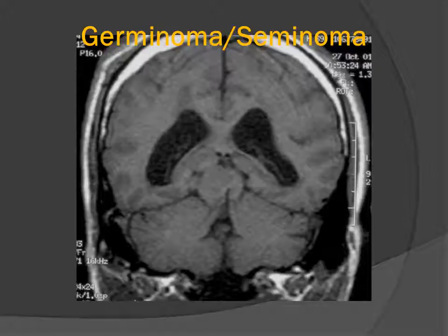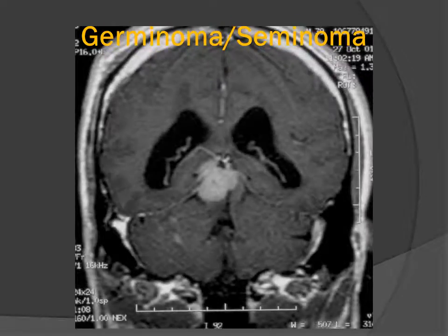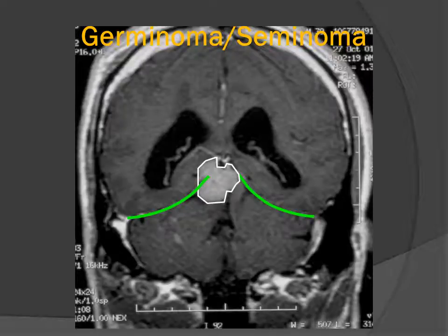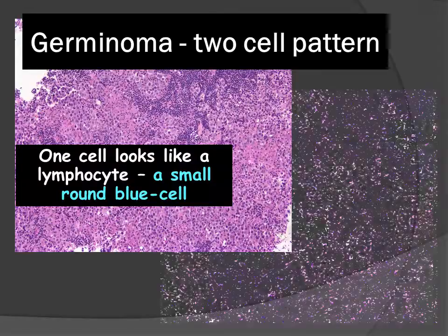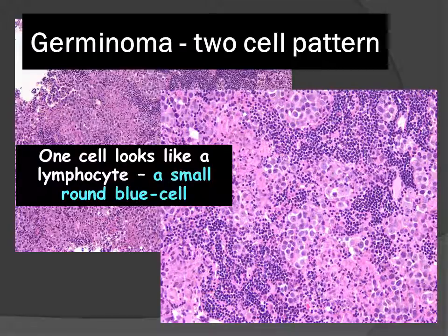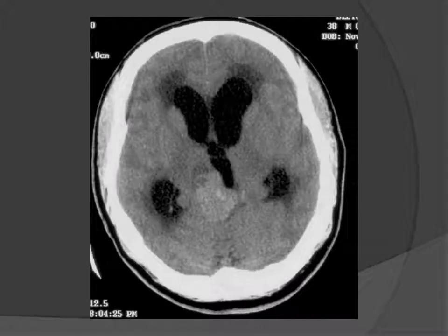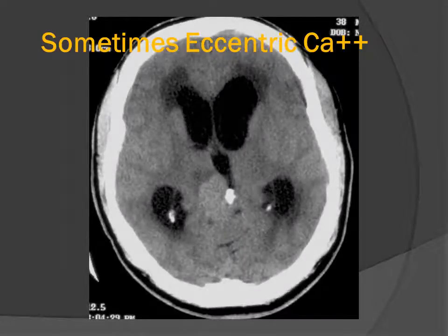Pineal region masses tend to grow through the tentorial hiatus into the posterior fossa. On this coronal T1-weighted exam without contrast and then after giving contrast material, we can clearly see that two-thirds of this tumor is extending through the tentorial opening into the posterior fossa. We can also see outlined in green the tentorial leaflets. When we look at the histology of pineal region tumors, we can see they commonly have a two-cell pattern. One of these cells looks like a lymphocyte — a small, round blue cell. These small, round blue cells probably give the tumor its high attenuation on non-contrast CT. Another example on CT shows a hyperattenuating mass in the region of the third ventricle and quadrigeminal plate cistern where the calcifications are pushed off to the side rather than being engulfed by the mass.